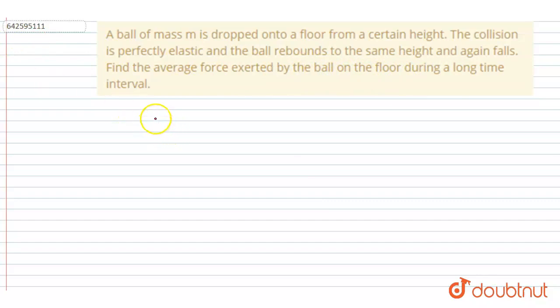If I talk about the average force, so average force is change in momentum by change in time. Since the mass is constant, I will write change in mass times change in velocity by change in time. So if you see, if the ball falls from a certain height h, then let's suppose this is the ball.